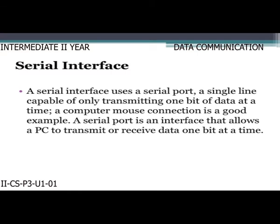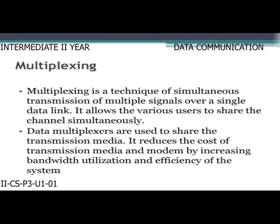A serial interface uses a serial port — a single line capable of transmitting only one bit of data at a time. A computer mouse connection is a good example. A serial port is an interface that allows a PC to transmit or receive data one bit at a time. Multiplexing is a technique of simultaneous transmission of multiple signals over a single data link, allowing various users to share the channel simultaneously. It reduces the cost of transmission media and modems by increasing efficiency.